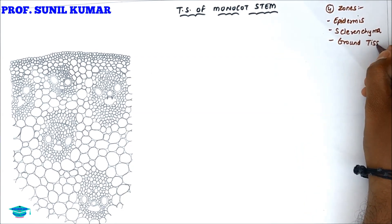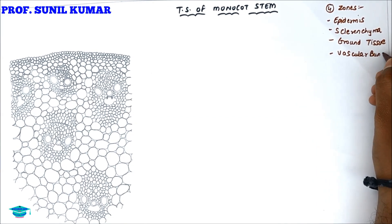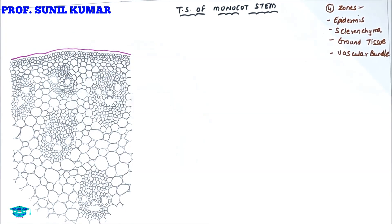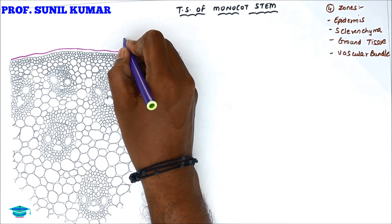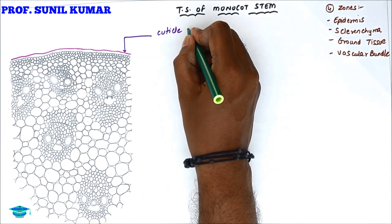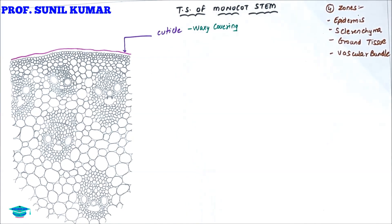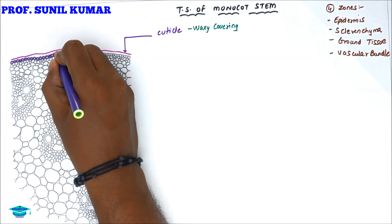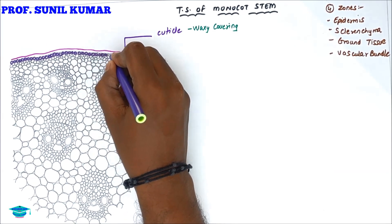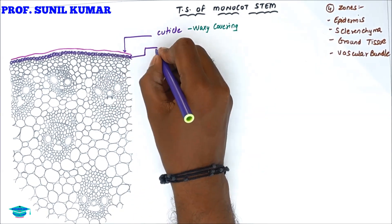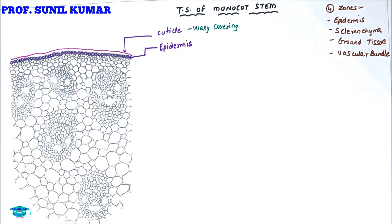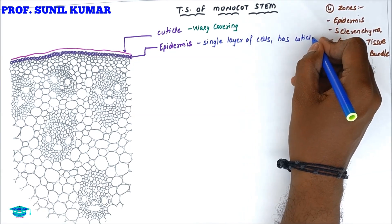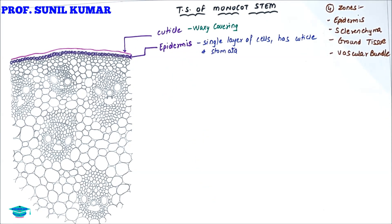Whenever we talk about monocot stem, the outermost layer has a waxy covering, and this waxy covering is called cuticle. Below the cuticle there will be the first layer, the uppermost layer, which is called epidermis. Epidermis is a single layer of cells; it has cuticle and it has stomata.